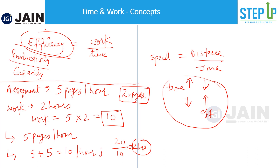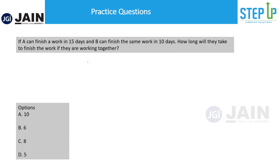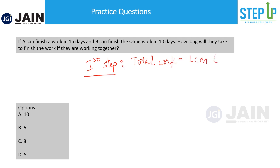Let's solve a question. This question says: if A can finish a work in 15 days and B can finish the same work in 10 days, how long will they take to finish the work if working together? The first step is to take the LCM of the number of days they take. We take the LCM because we want to reduce our calculations — I don't want to get into things like per day efficiency is 1/15 or 1/10. Let's take the LCM of 15 and 10 and assume the total work to be that. The LCM comes to 30, so we assume total work to be 30 units.